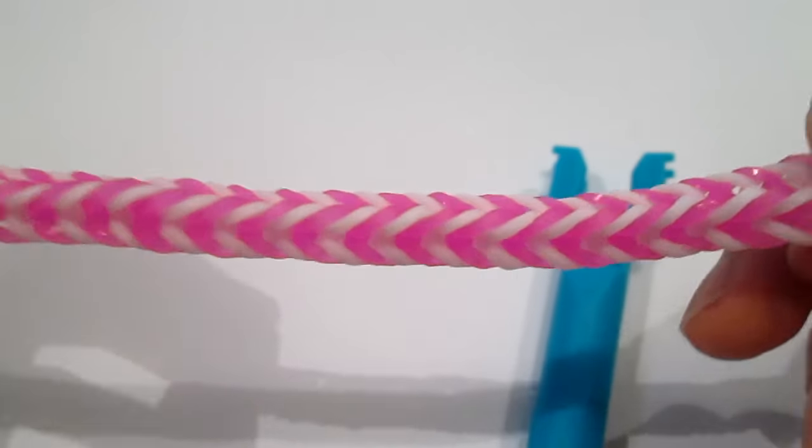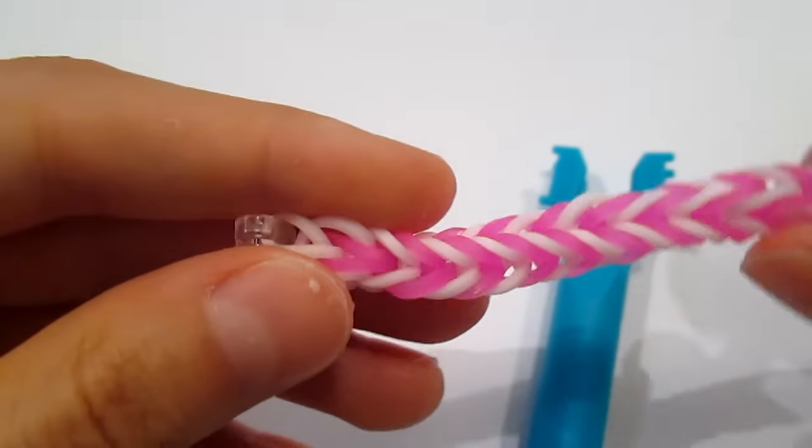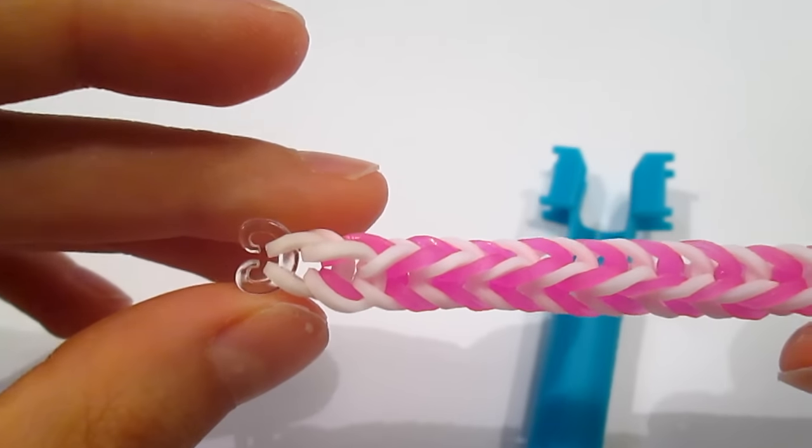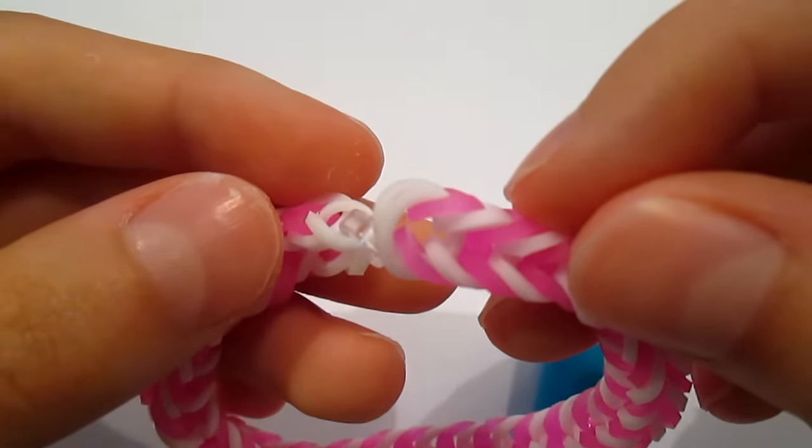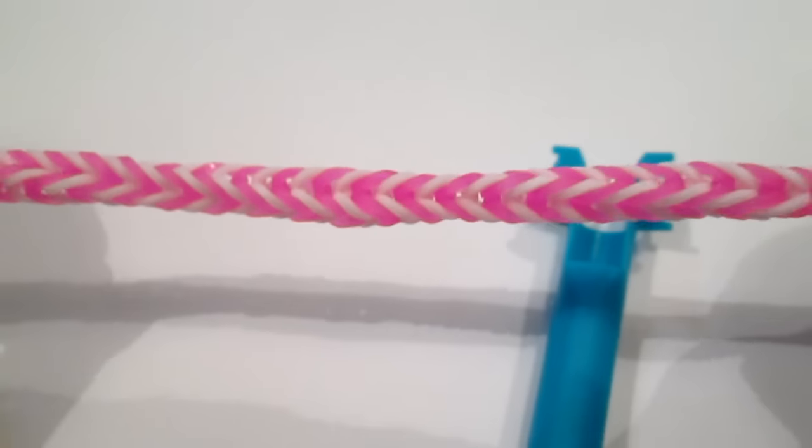But anyways, you make a normal fishtail with a cap band at the end, and then you clip it at the top like you normally would. But you don't clip the bracelet together. You just leave it straight for now.